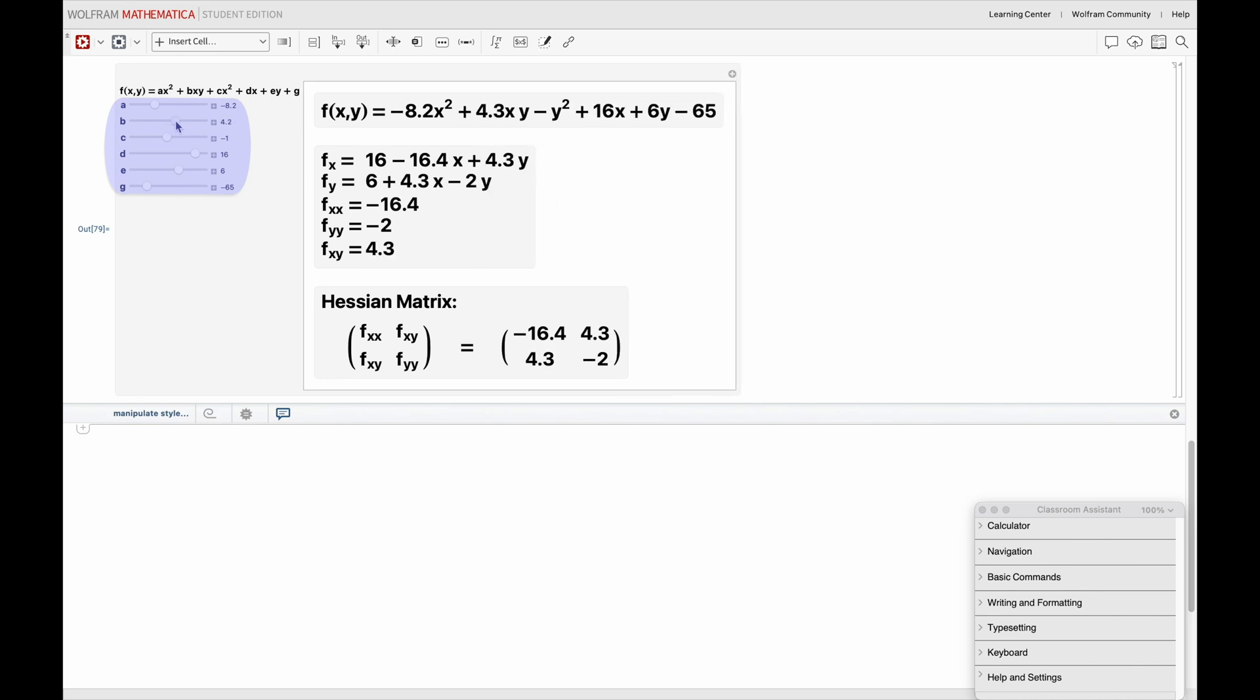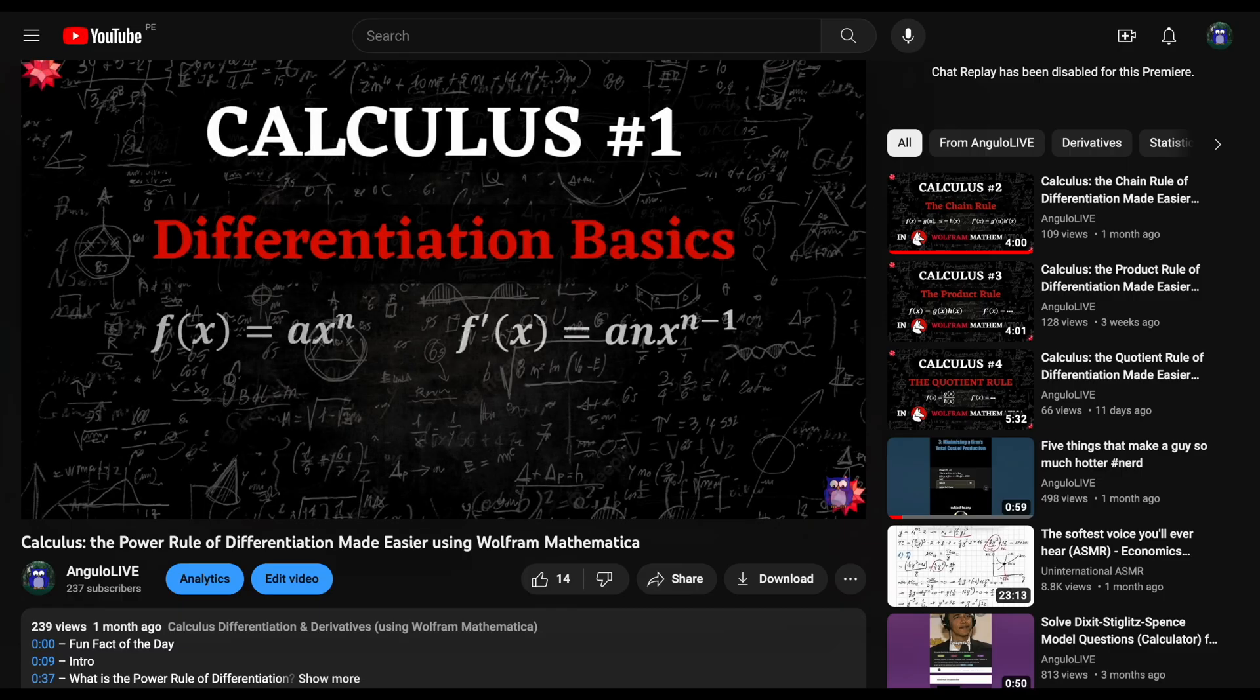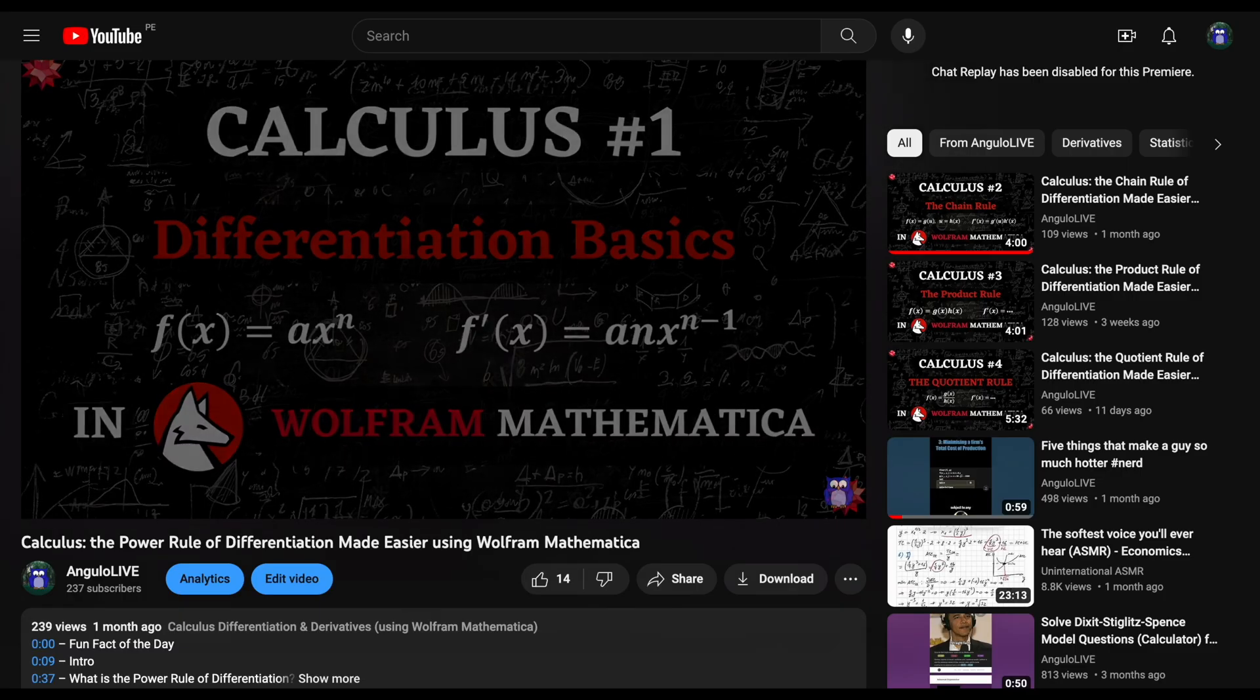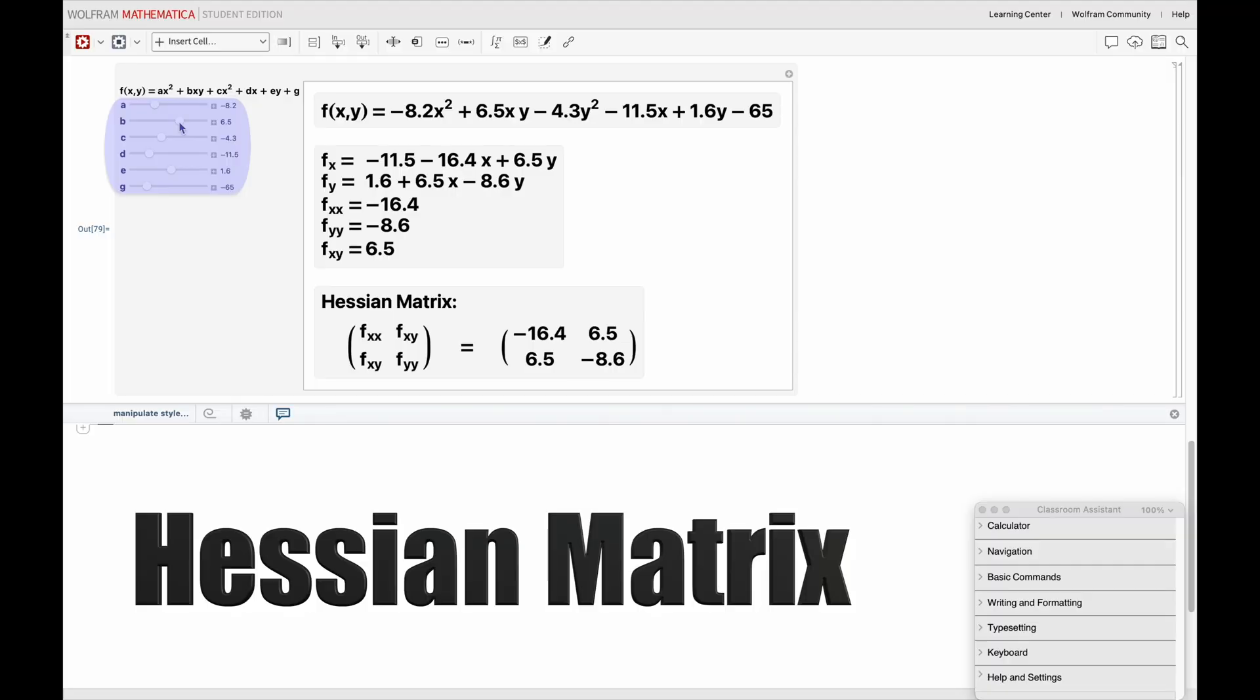Also, with second order partial derivatives, we can construct a matrix that will give us important information for when we start optimizing multivariate functions, which we will do in a later video, so make sure to stay tuned. This matrix, called a Hessian matrix, is comprised diagonally downwards of the second order partial derivatives with respect to each variable two times, and diagonally upwards of the cross partial derivatives.